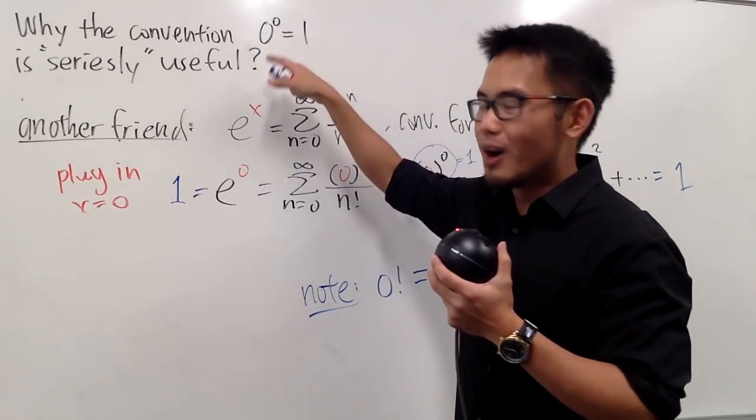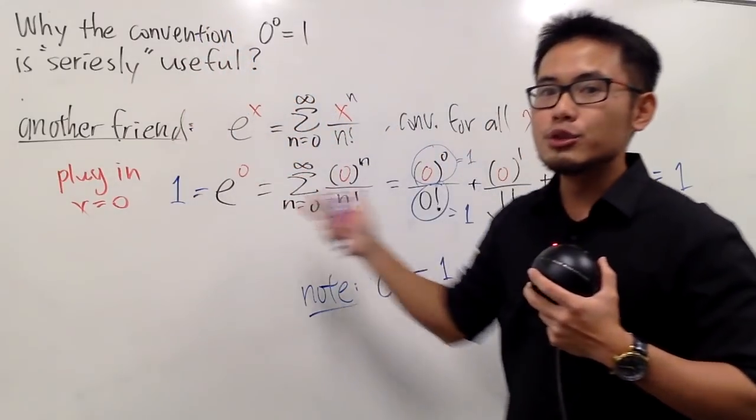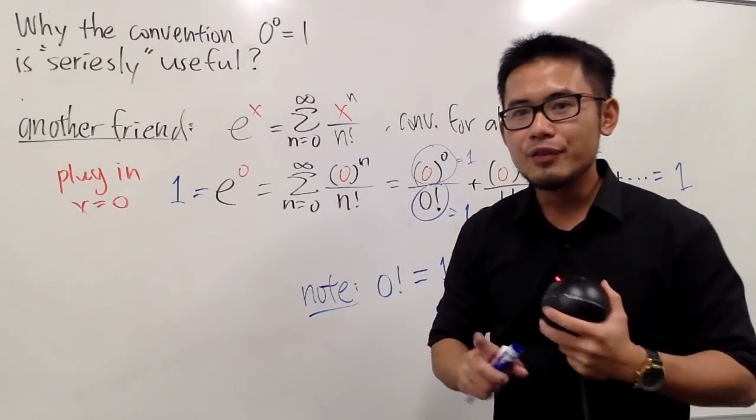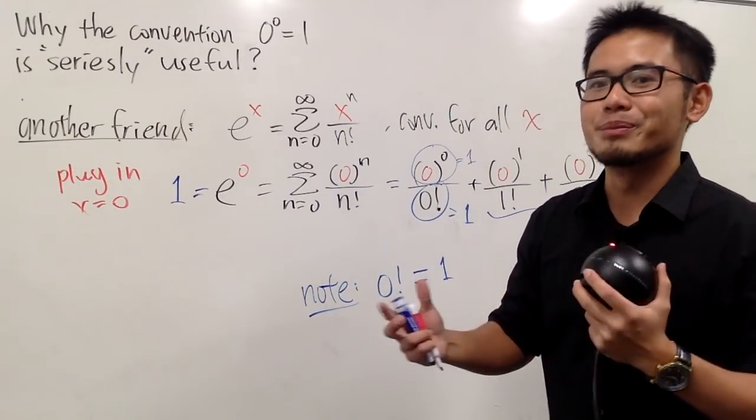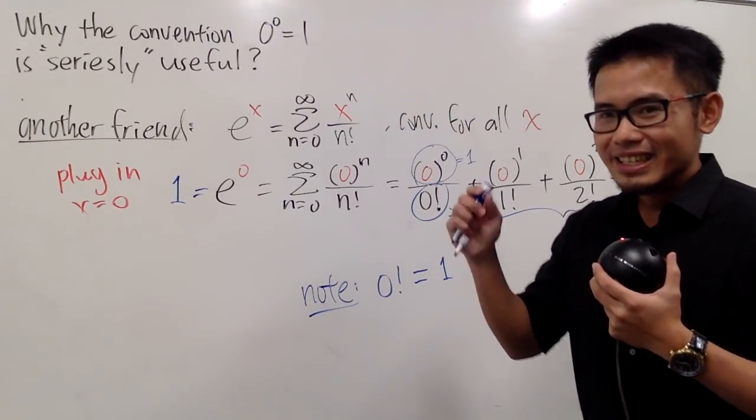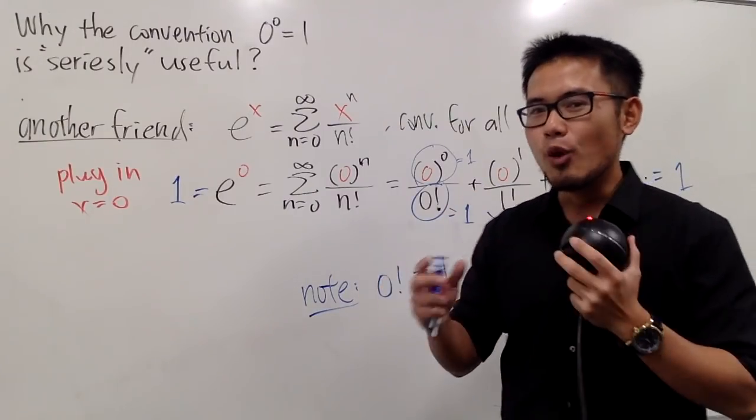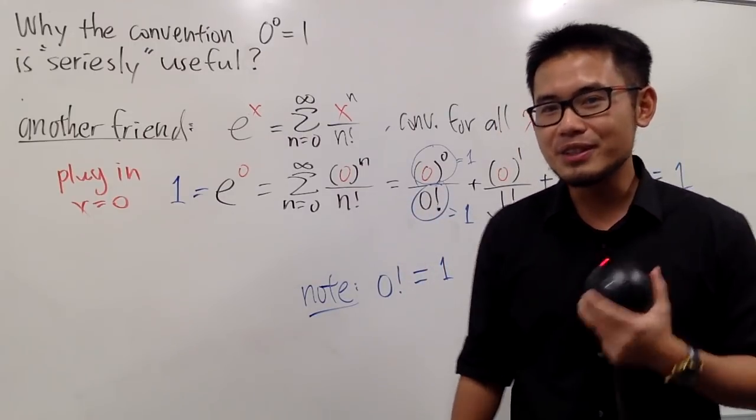And final remark, 0 to a 0 is equal to 1, it's a convention in the power series situation, but if you are talking to an algebra student, 0 to a 0 is undefined. We cannot compute what that is. And if you are talking about limits, the limit, and then you end up with the form 0 to a 0 power, you can get a lot of different numbers. If you haven't seen my videos, go check them out.